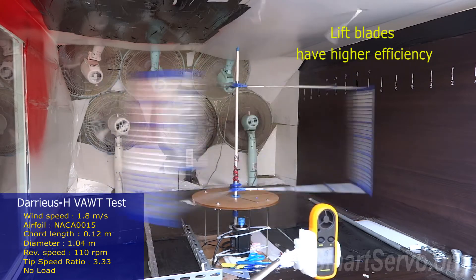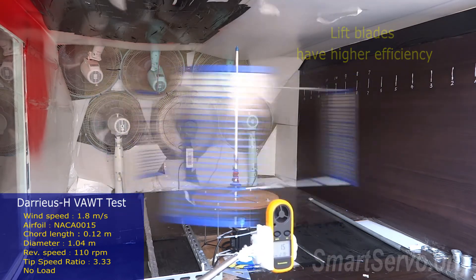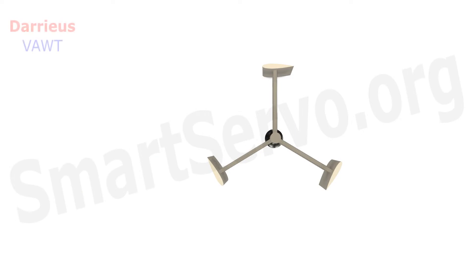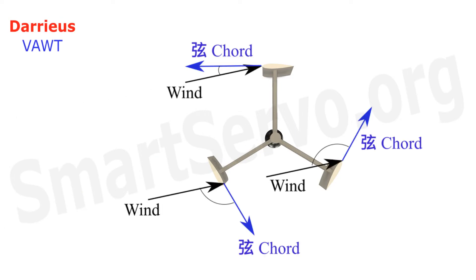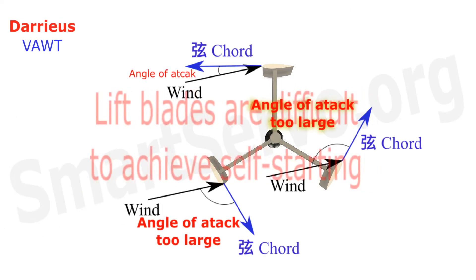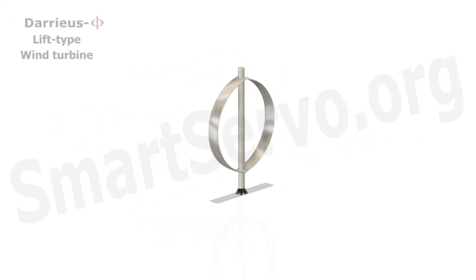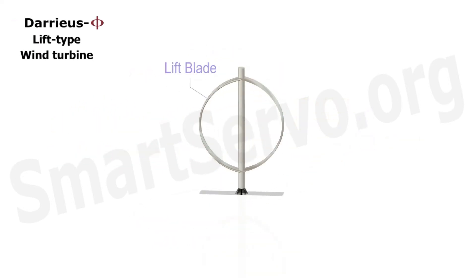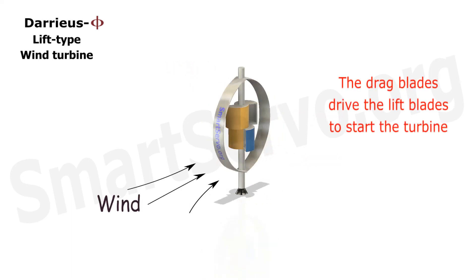Therefore, it is efficient, but it is not easy to start by itself. The reason is that the angle of attack of the blade cannot be maintained in an appropriate range at low speed, resulting in a stall. Therefore, lift blades are often paired with drag blades to improve startability.